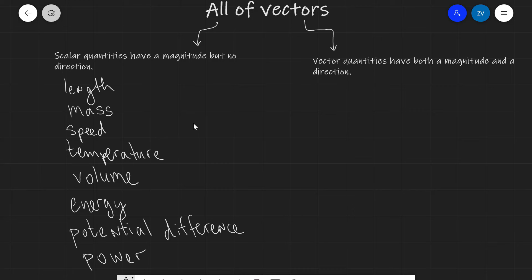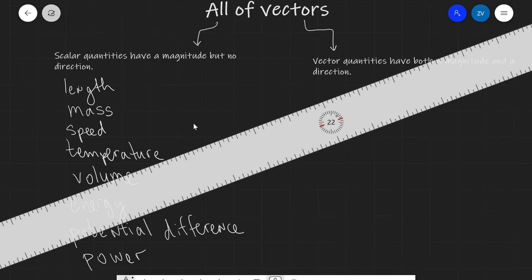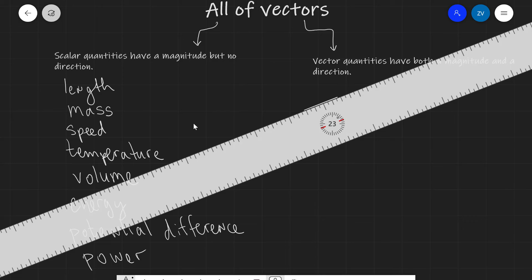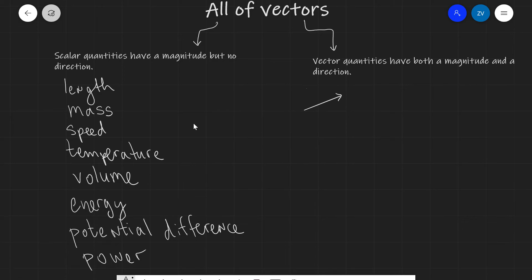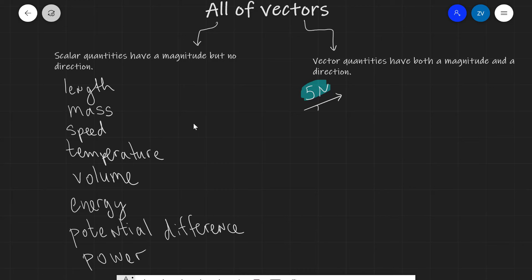Now, what is a vector quantity? A vector quantity has both a magnitude and a direction. It is typically expressed by an arrow. For instance, if I had a force of, let's say, five newtons, the five is the magnitude and the direction is defined by the direction of the arrow. This arrow in particular was 23 degrees to the horizontal. We can define both the magnitude and the direction of this quantity.